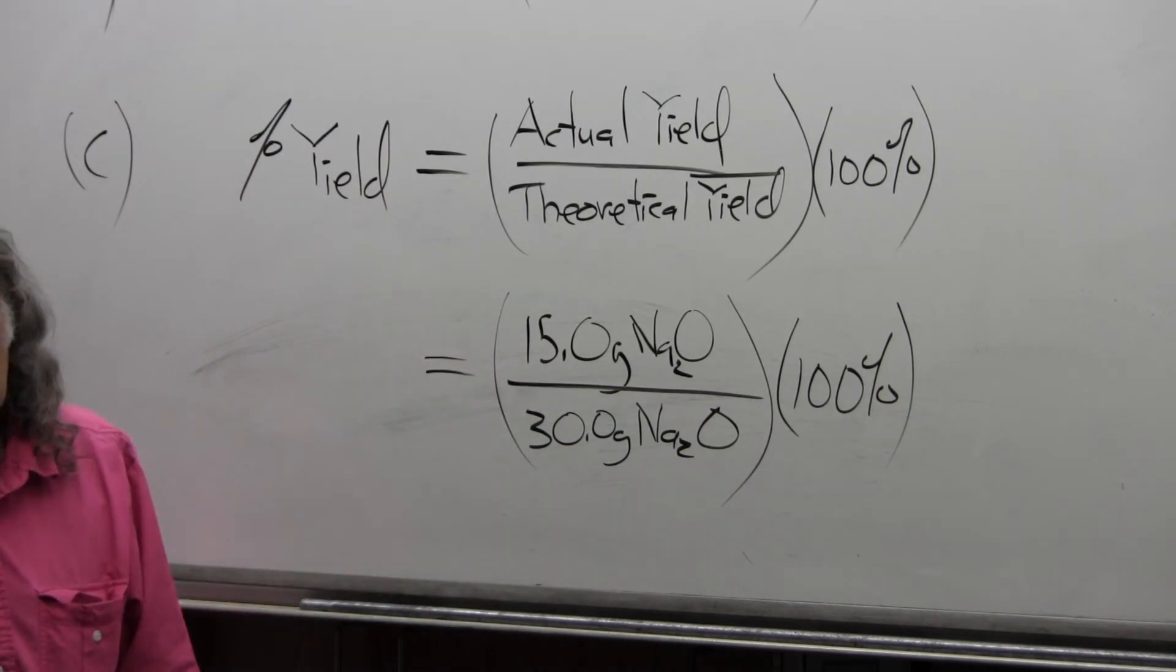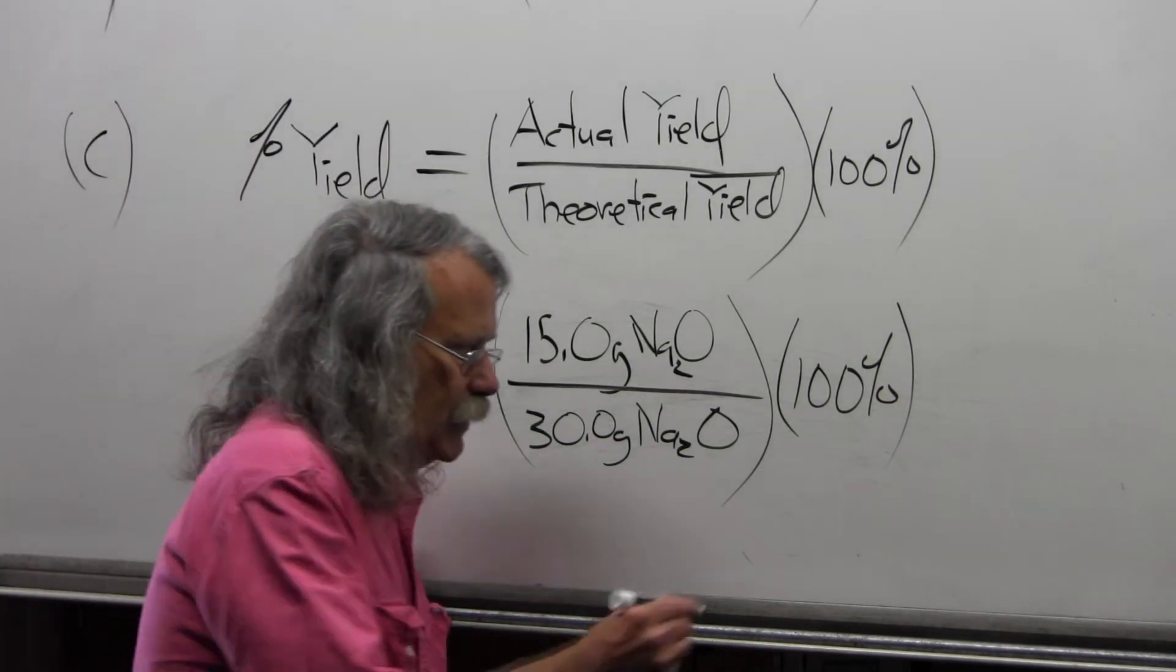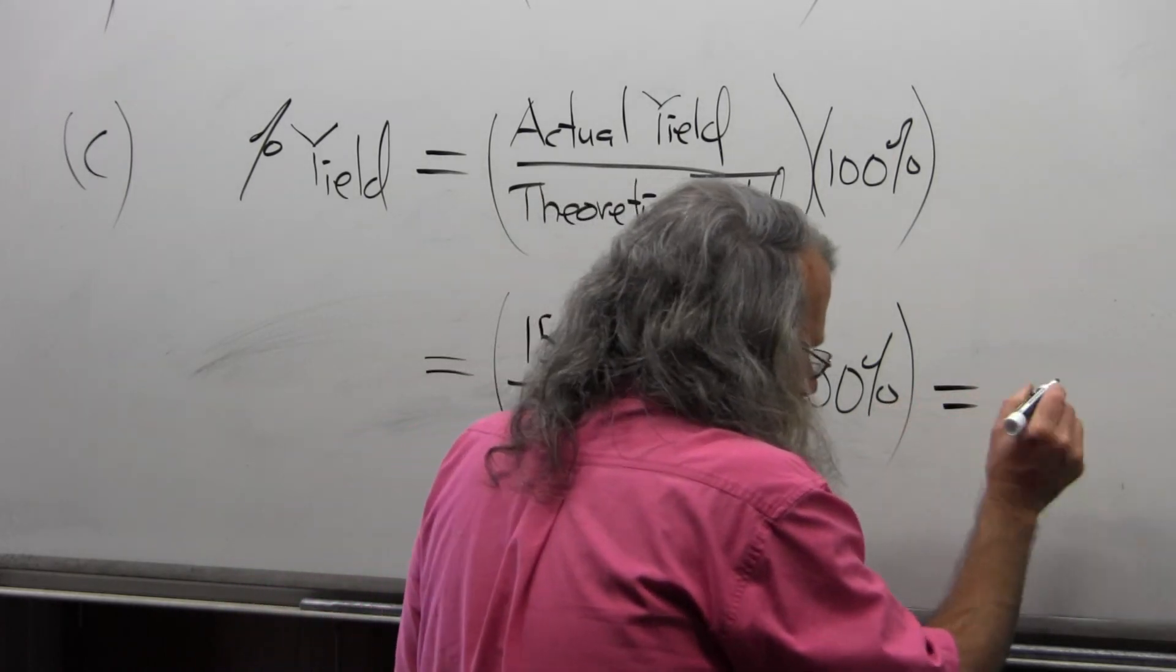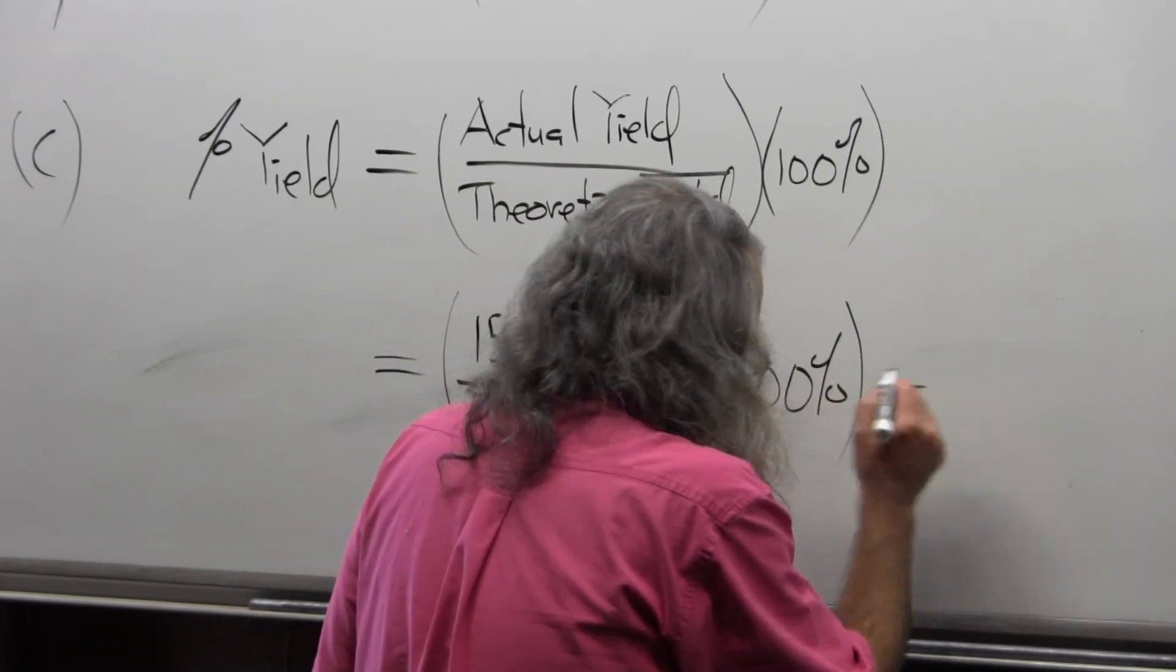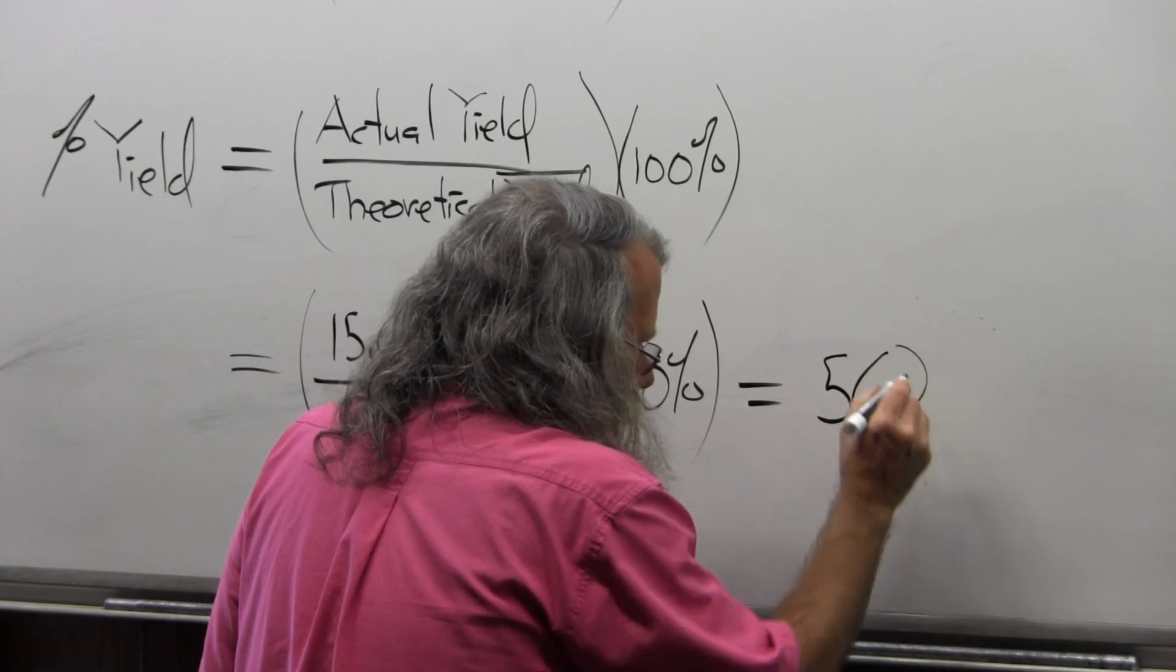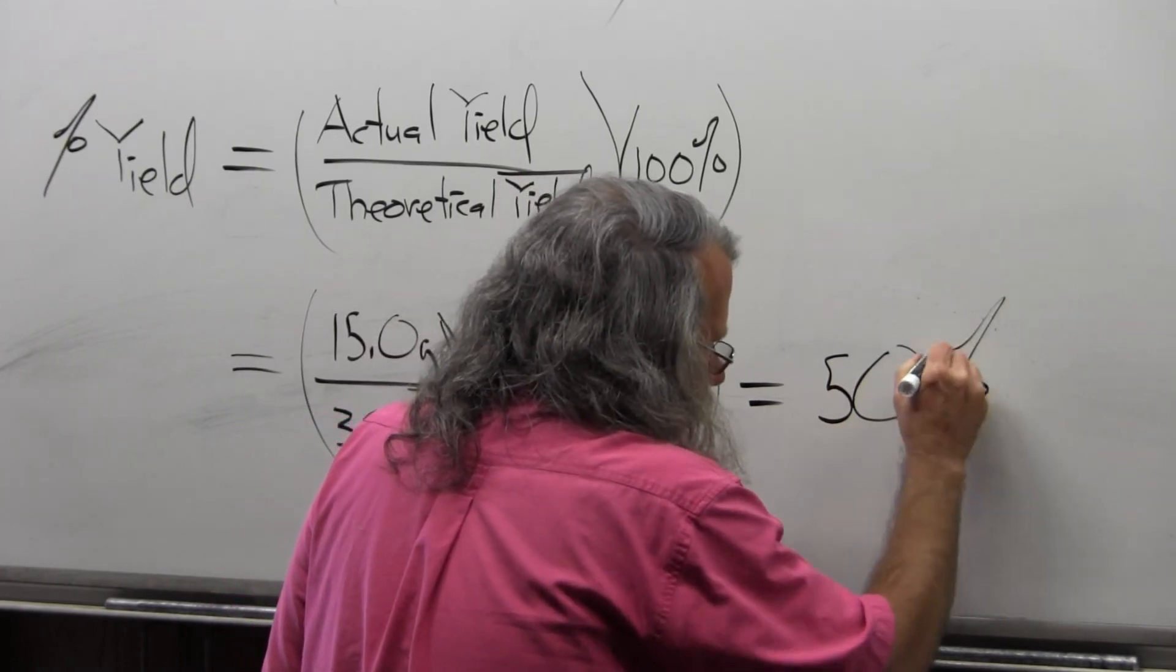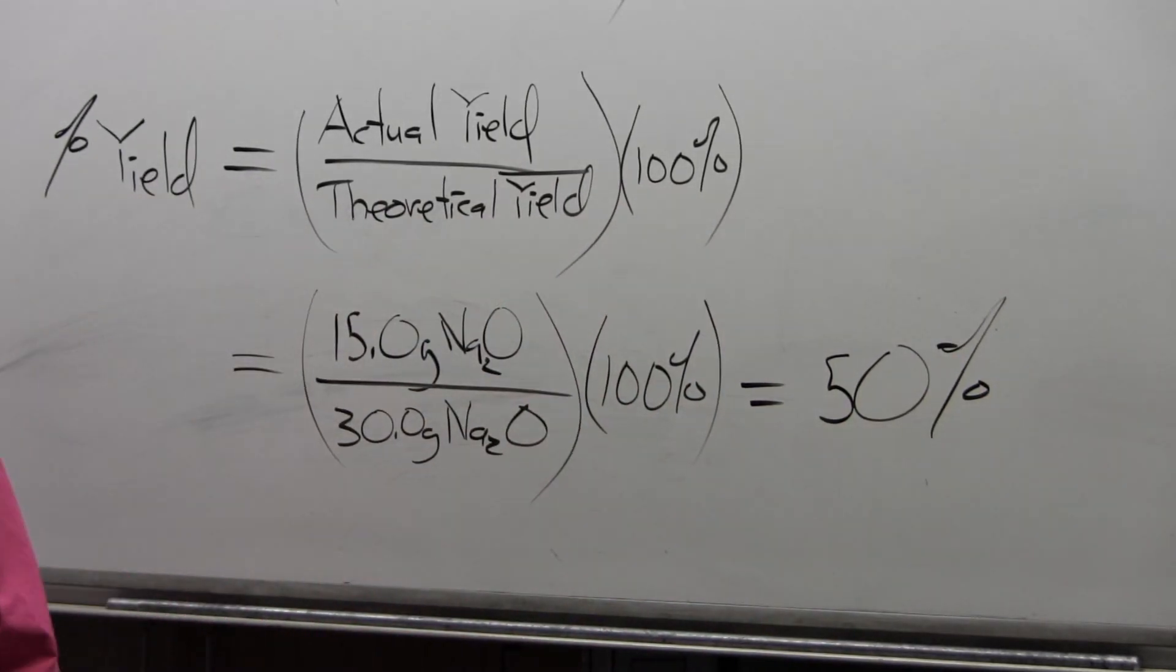What's 15 divided by 30? It's going to be one-half, and that's going to be equal, therefore, to 0.5 times 100, which is 50 percent, which answers part C.